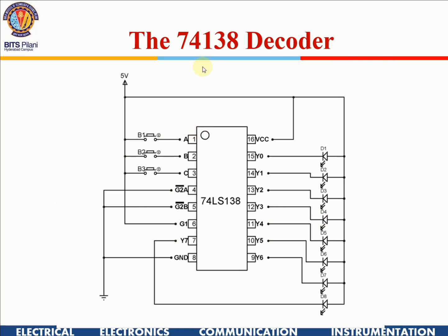We are going to use a 74-series decoder. The exact IC number is 74138. This is a 3-to-8 decoder. It has three inputs on pin numbers 1, 2, and 3, which are A, B, and C. A is the LSB and C is the MSB. On pin number 16 we give VCC.